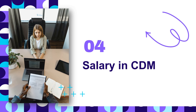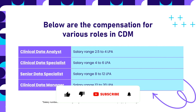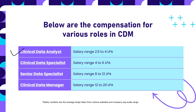Regarding compensation in clinical data management: at the fresher level as a clinical data analyst, salary is around 2.5 to 4 lakhs per annum. As a clinical data specialist, it rises to 4 to 6 lakhs per annum. A senior data specialist earns 8 to 12 lakhs per annum, and a clinical data manager can earn 12 to 20 lakhs per annum. These are averages compiled from various company websites and colleagues in clinical research, giving a rough estimate of what to expect at each role.